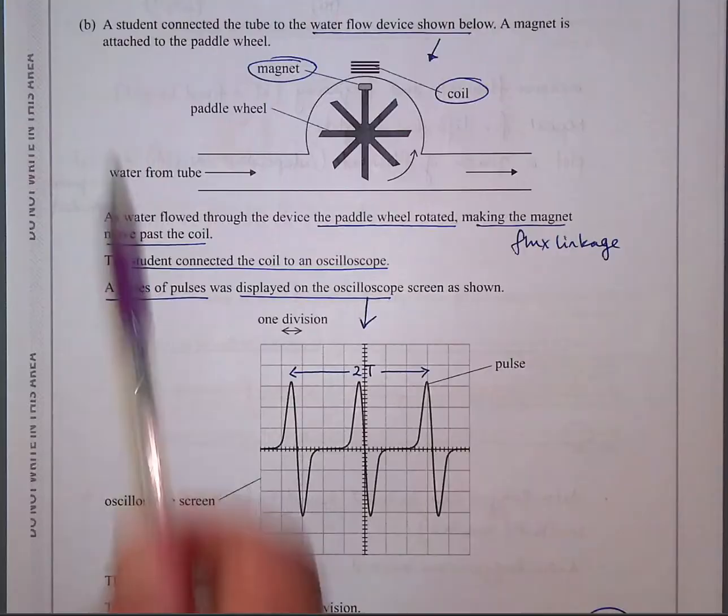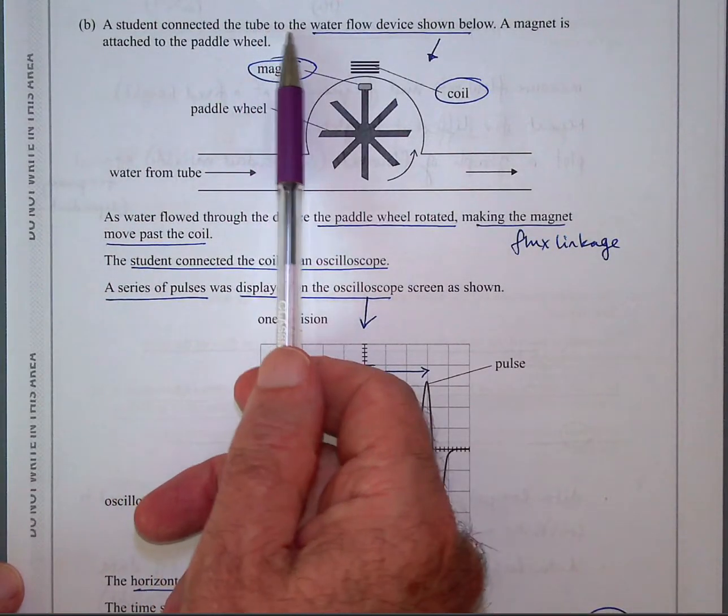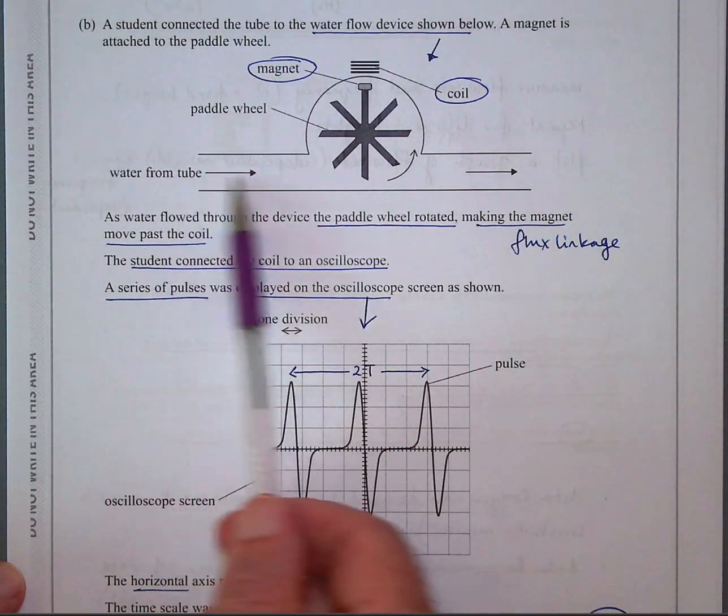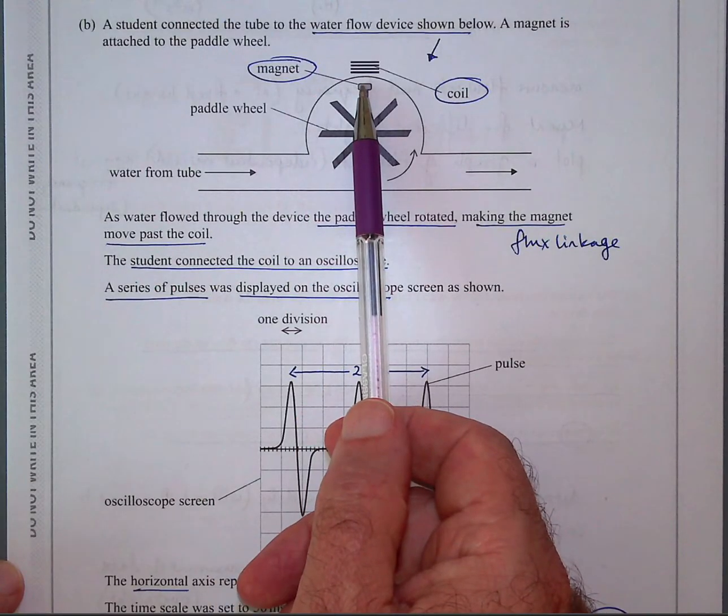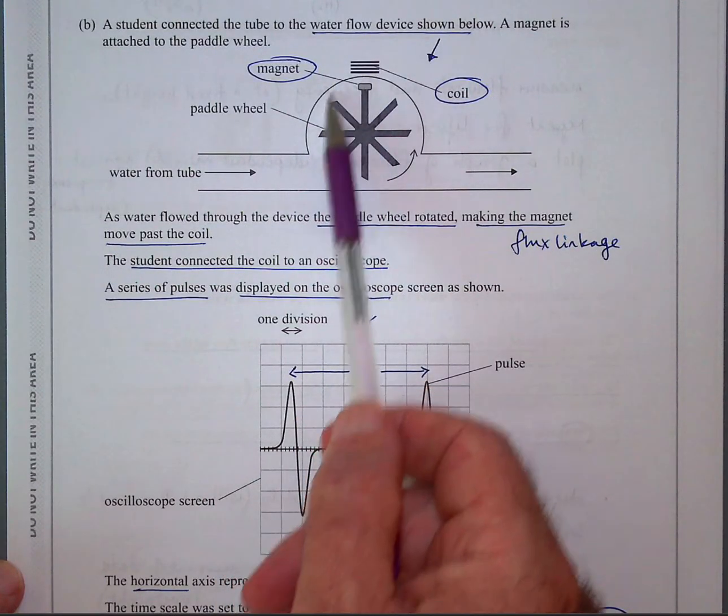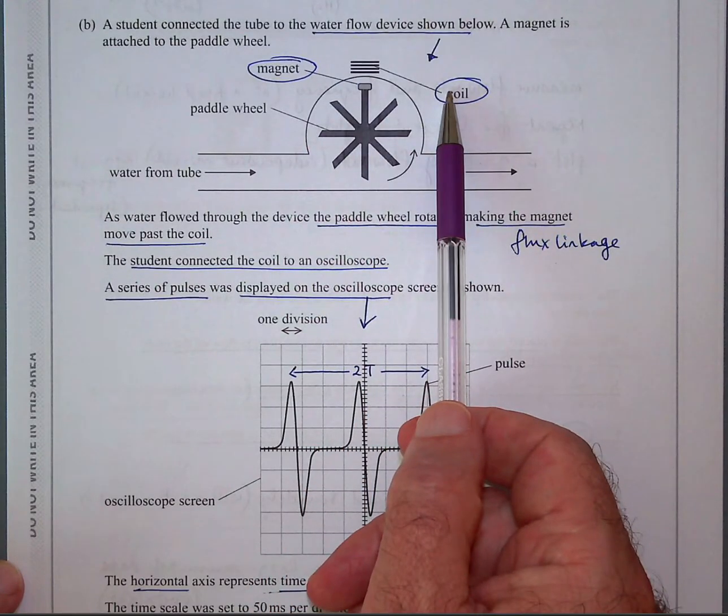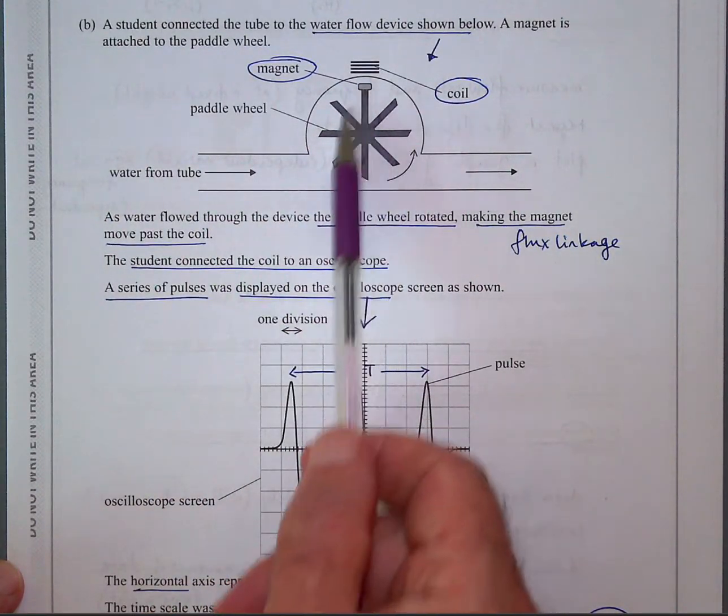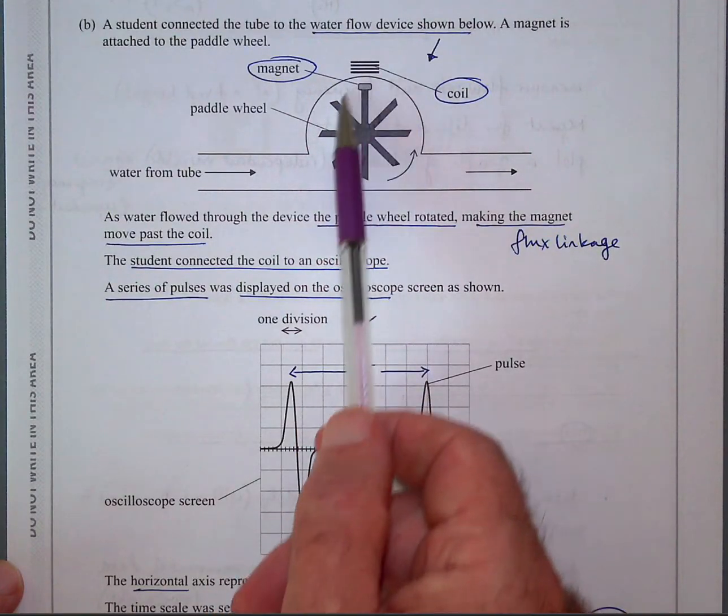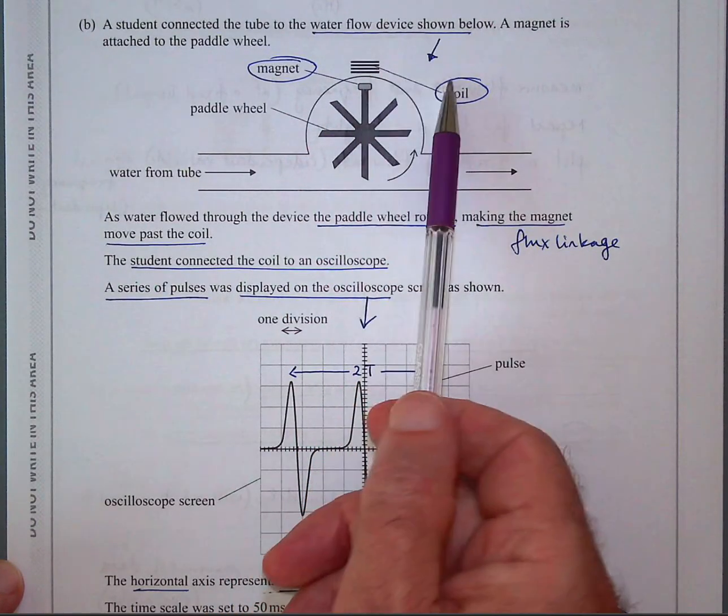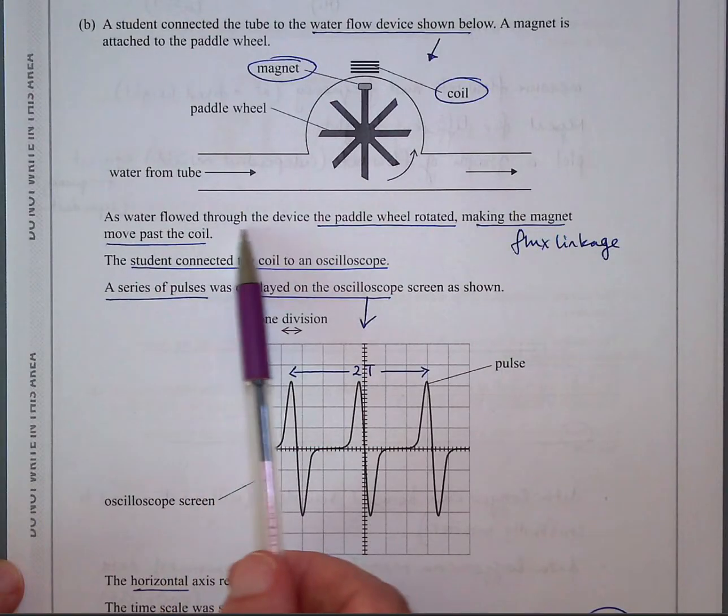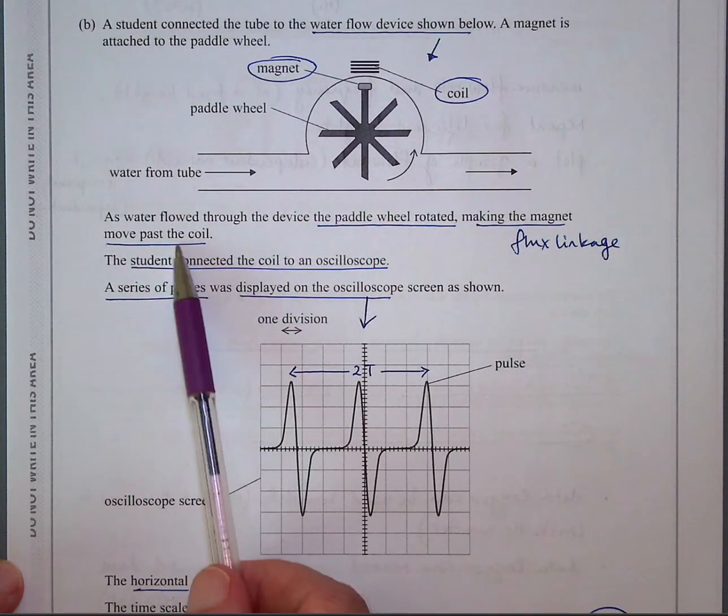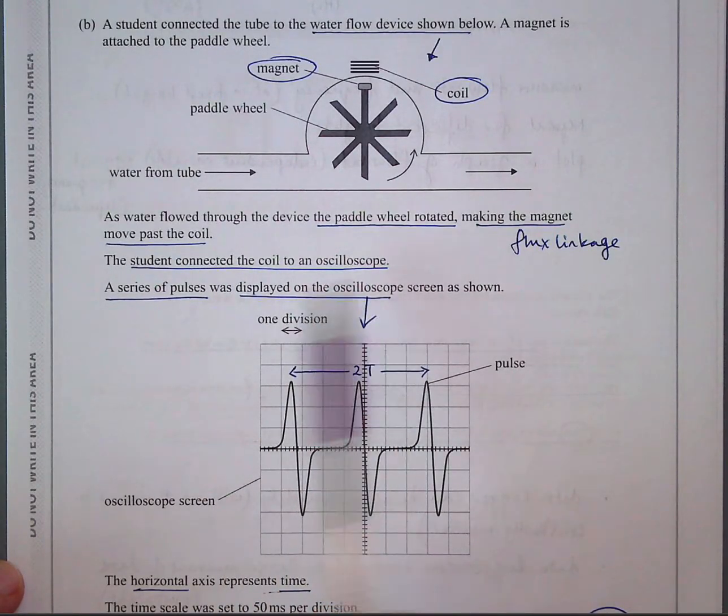Question 1b. The student then connected the tube to the water device shown below. So it's got a paddle wheel here. The water's coming here. It causes the paddle wheel to rotate like a water mill. And there's a magnet at the top here. And above, outside the plastic tubing or whatever they're using, is a coil. So when water flows in, it rotates. The magnet keeps going round. Every time it rotates once, it makes a connection with the coil, which creates a flux linkage and that produces an EMF. The water flowed through the device, the paddle wheel rotated, making the magnet move past the coil. The student connected the coil to an oscilloscope and a series of pulses was displayed on the oscilloscope as shown below.